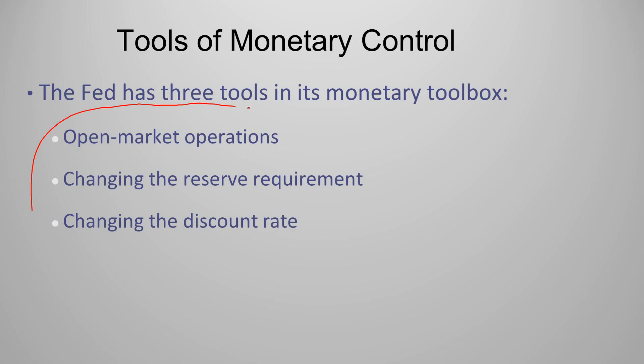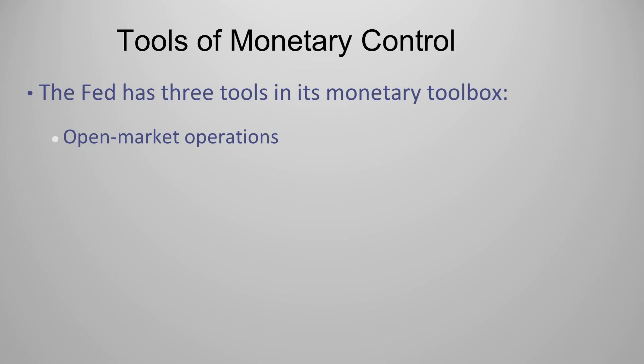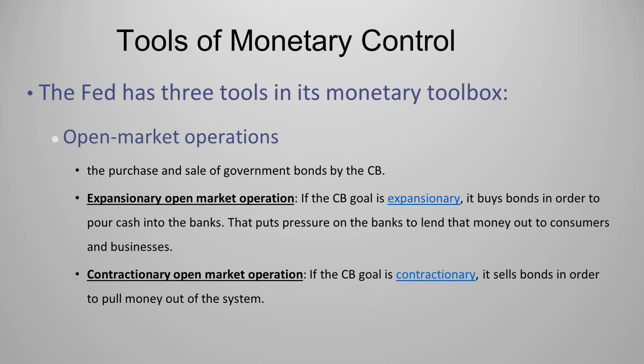These three tools are available to every government and every central bank in the world. They can use either open market operations, changing the reserve requirement, or changing the discount rate to increase or decrease money supply in a country. The first tool is open market operations, which means the purchase and sale of government bonds by the central bank. There is either expansionary or contractionary open market operations.